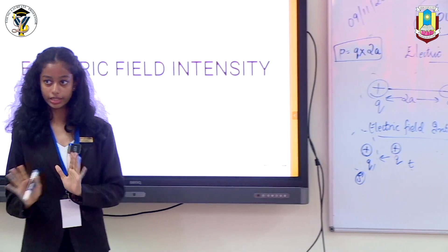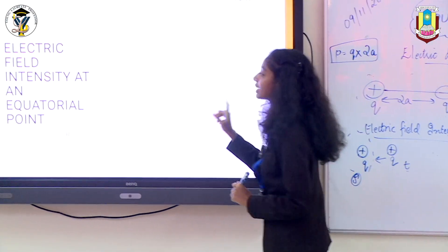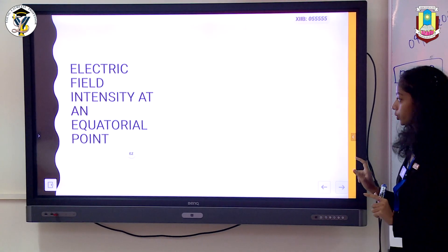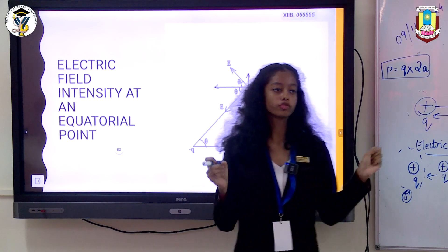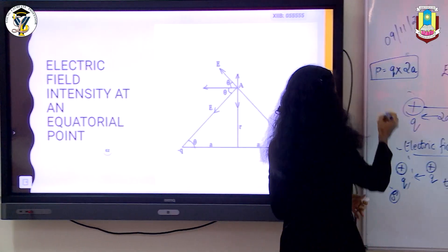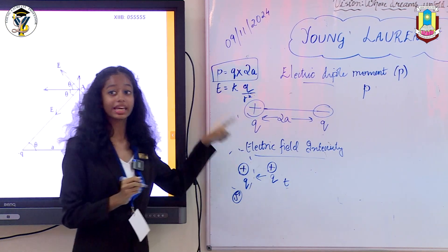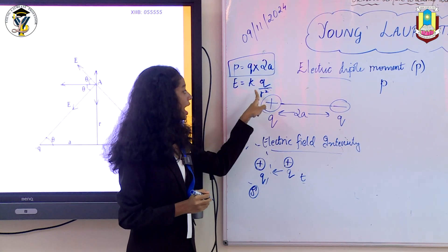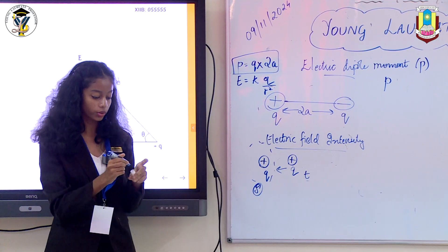Now let's move to our main topic: electric field intensity at an equatorial point on the electric dipole. To find the dipole moment we have P = q × 2a. To find electric field intensity, E = kq / r², where k is the electrostatic force constant, q is the charge, and r is the distance.